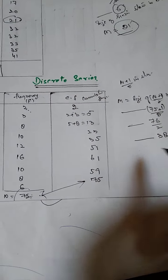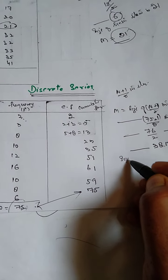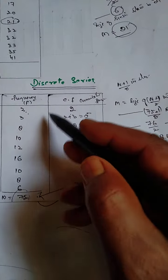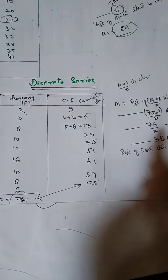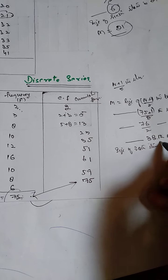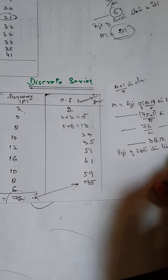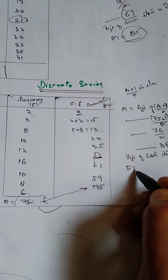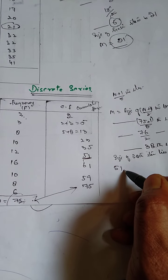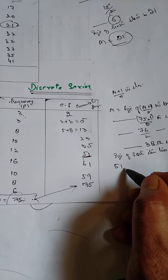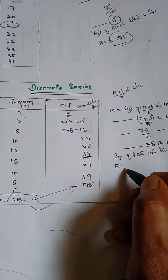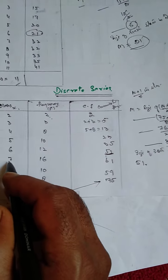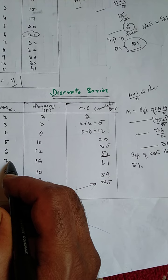Now we have to find where does our 38th item lie. Size of 38th item: it lies in CF 51.